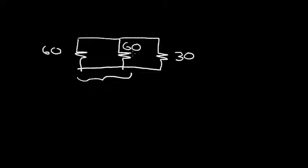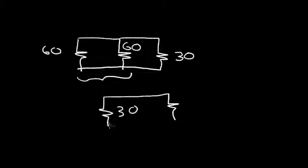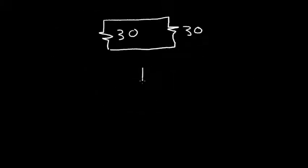In this case, we can just note by inspection that if the parallel resistors are the same value, the math always works out that the value becomes half. So the two 60 ohm resistors in parallel become 30 ohms, leaving 30 ohms in parallel with another 30 ohms. And again, whenever we have equal values in parallel, the value cuts in half. So the equivalent resistance in this case is 15 ohms.